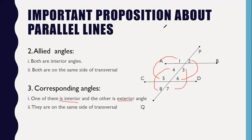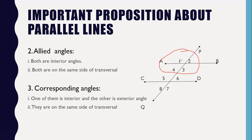Now, vertical angles: these two lines are intersecting each other, so angles one and three, and angles two and four form two pairs of vertical angles at the upper intersection. At the lower intersection, angles five and seven, and angles six and eight are vertical angle pairs.